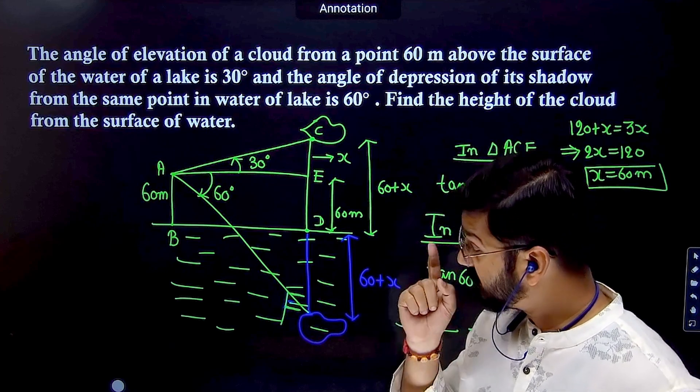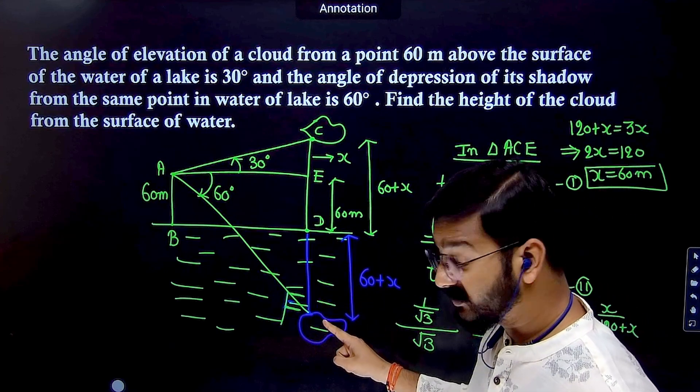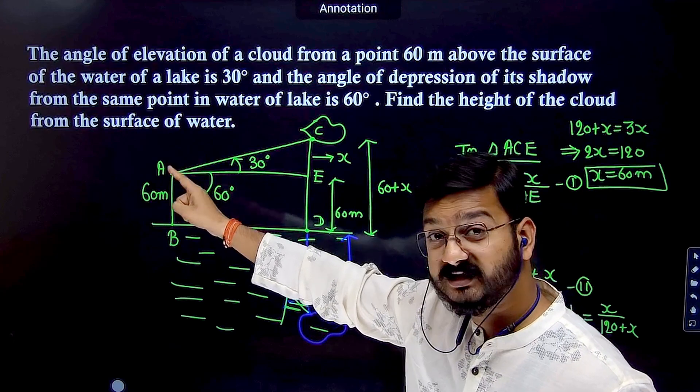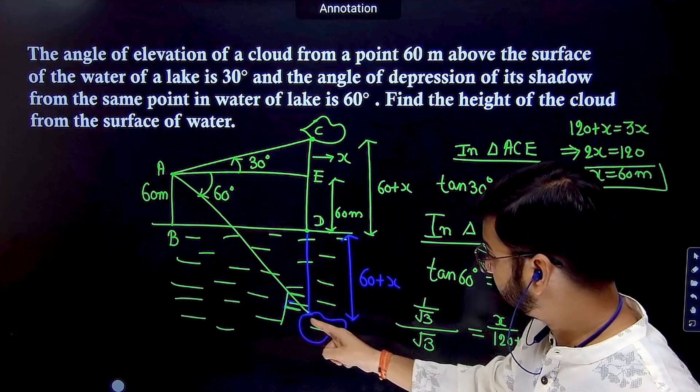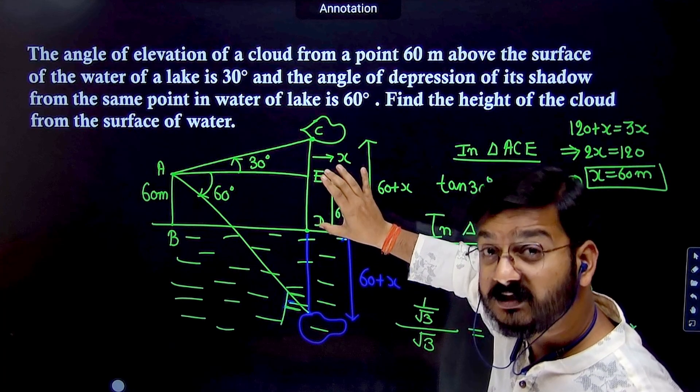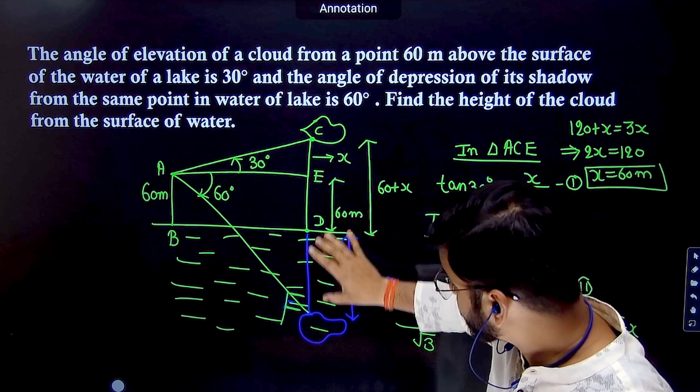They can also ask: what is the distance between the reflection and the point of observation A? If they ask for distance AF, the opposite side is 60 + X + 60 = 180 meters, and the angle is 60°.